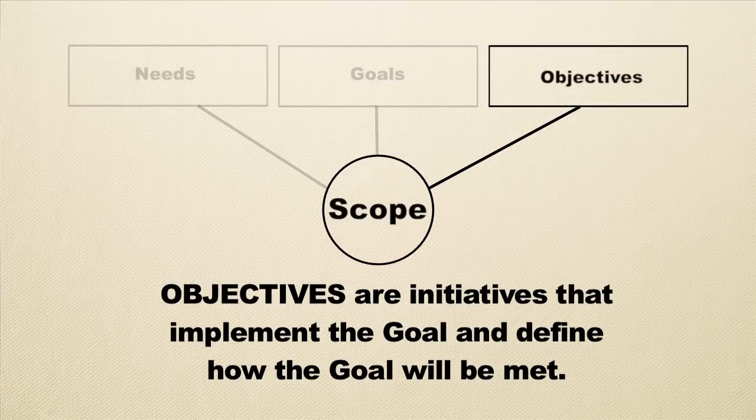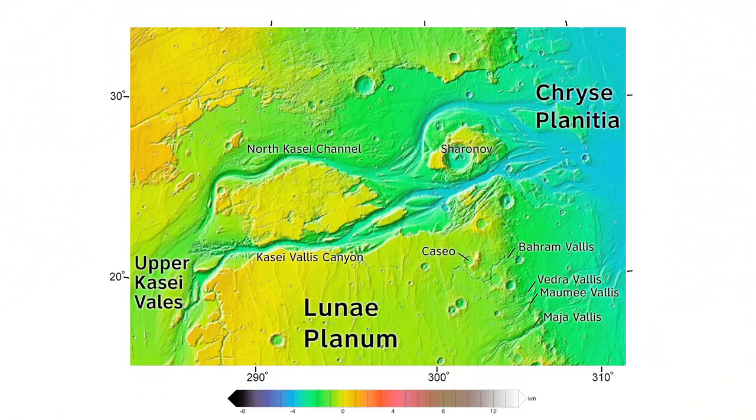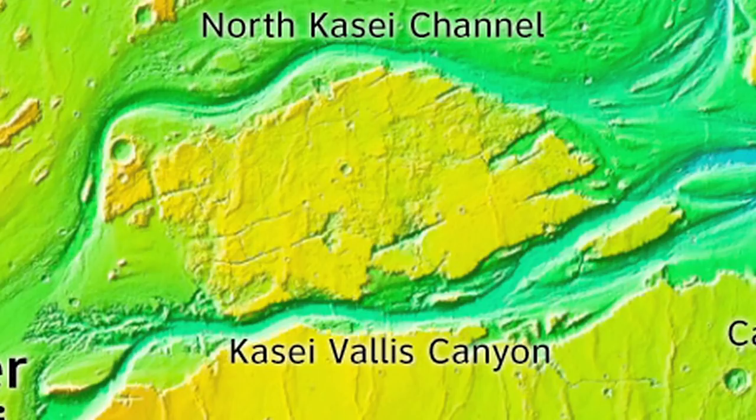The next step is to define objectives for the mission. Objectives are initiatives that implement the goal and define how the goal can be met — another lower level of detail. The process of finding water may have a number of objectives. One might be to search in certain areas of Mars where there have been signs of water from Earth — certain plateaus, areas, or canyons that might have to be explored. If you can meet that objective of exploring those areas, you have a good chance of meeting the goal of finding water, which helps meet the need of finding whether Mars was once habitable.